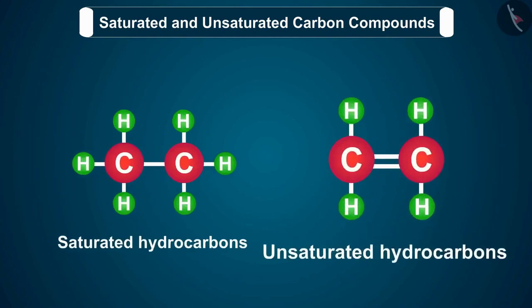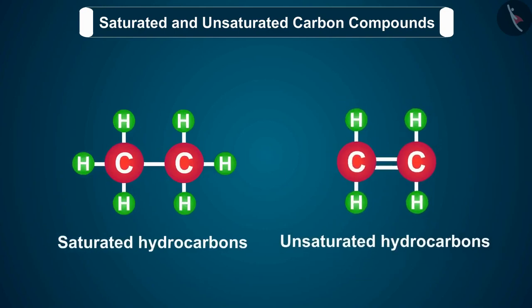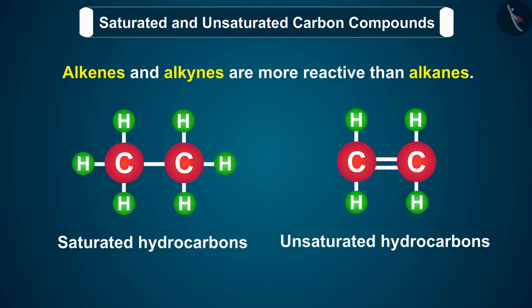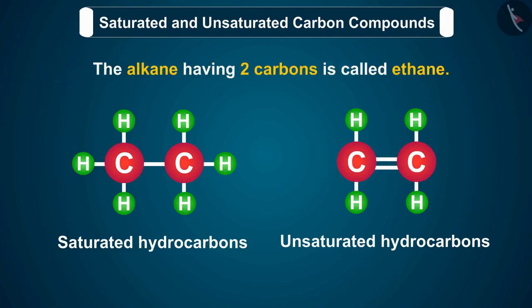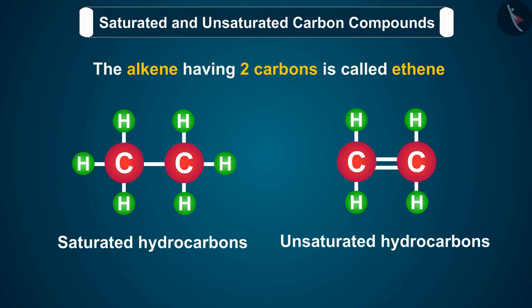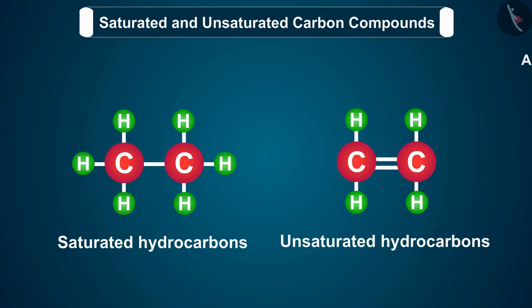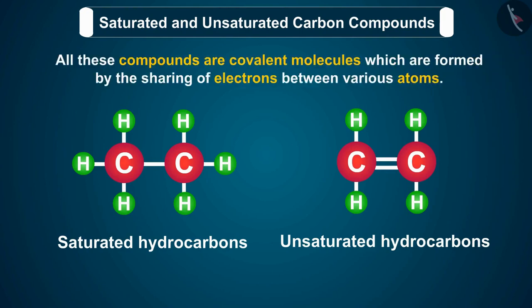You should know that the unsaturated hydrocarbons are more reactive as compared to saturated hydrocarbons. In other words, alkenes and alkynes are more reactive than alkanes. The alkane having two carbons is called ethane. The alkene having two carbons is called ethene. And the alkyne having two carbon atoms is ethyne. All these compounds are covalent molecules which are formed by the sharing of electrons between various atoms.